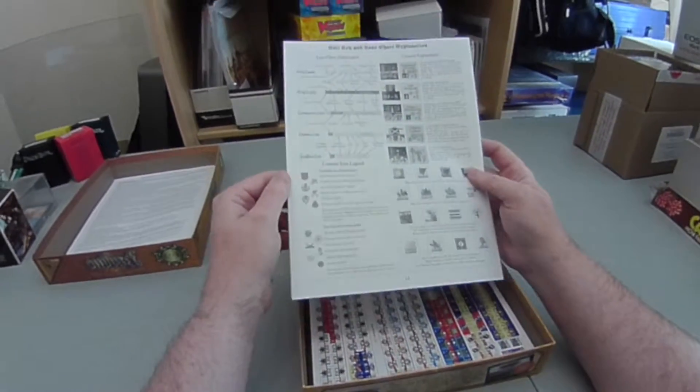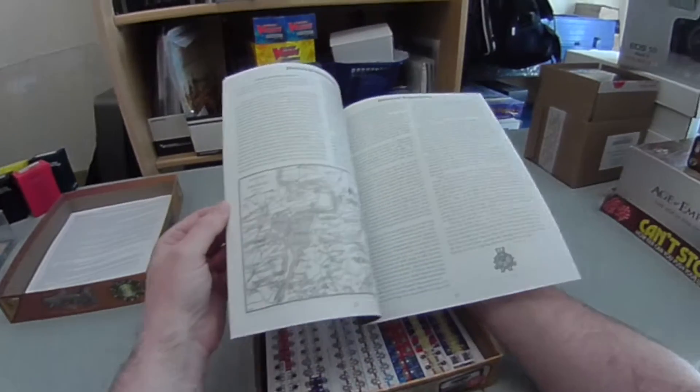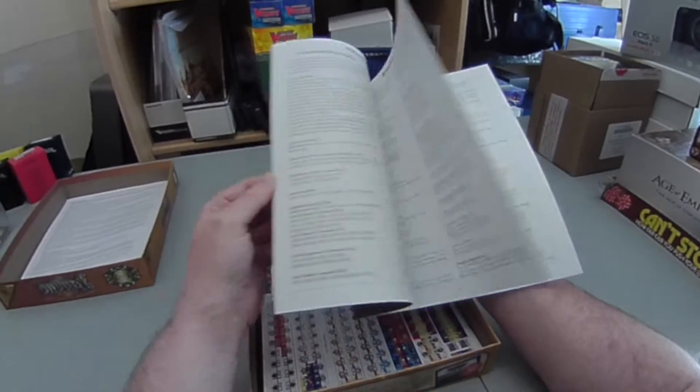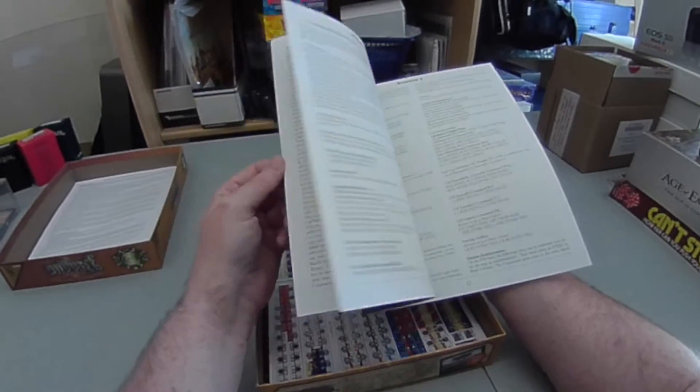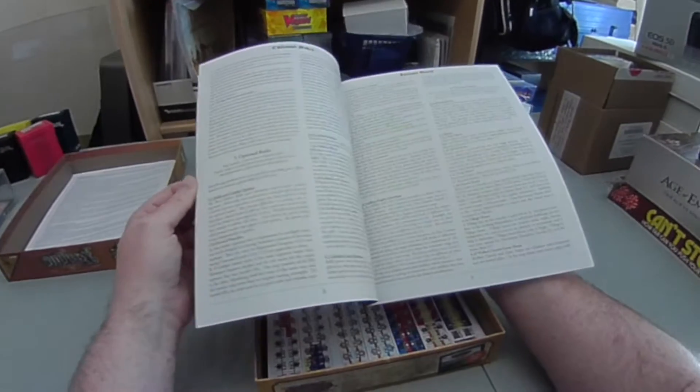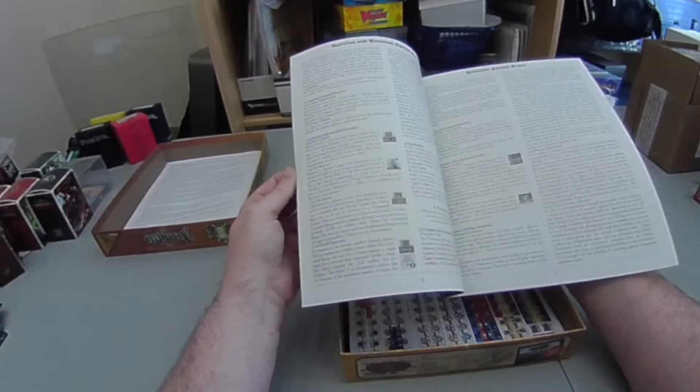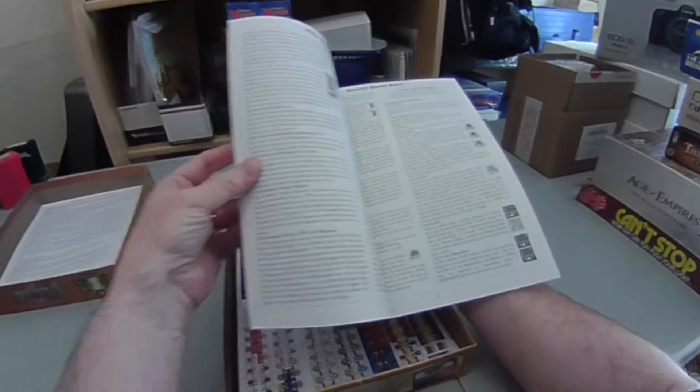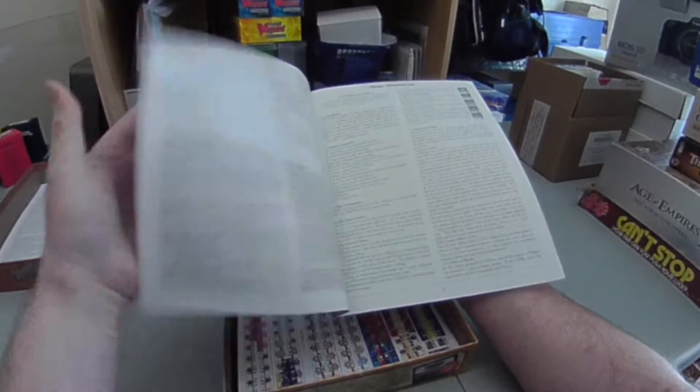It's on the back of the counter. Descriptions of the battle itself, historical commentary, various different scenarios. So you don't have to play the full thing because it's a three mapper, so the full thing is quite a lot to go at. Special rules, optional rules, descriptions of the leaders and any special capabilities they've got.